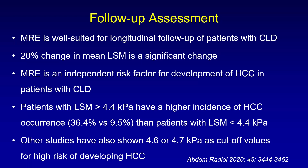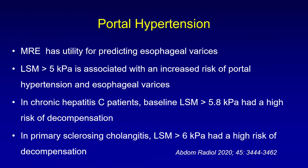MRE has also been used for predicting esophageal varices — LSM greater than 5 kilopascals is associated with increased risk of portal hypertension and esophageal varices. In hepatitis C, a baseline LSM greater than 5.8 kilopascals is associated with a high rate of decompensation. Similarly, for primary sclerosing cholangitis, LSM greater than 6 kilopascals is associated with a higher risk of decompensation. There are several studies on prediction and usability of MRE for these endpoints.